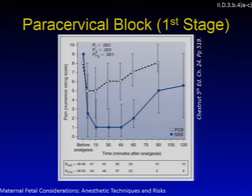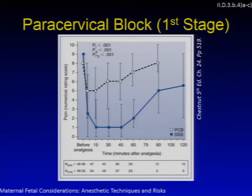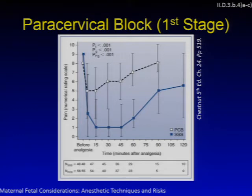Alternative analgesic techniques for labor include the paracervical block, most helpful for the first stage. A study randomizing 122 parous women to bupivacaine paracervical blocks versus single-shot spinals with bupivacaine plus fentanyl found single-shot spinal superior, although the paracervical block group achieved VRS pain scores of 3 or lower in 43% of patients, and over half would be happy to receive it again — with zero fetal bradycardia in both groups. Another study showed no differences in newborn infant behavior or neurologic function between paracervical block and no analgesia groups.